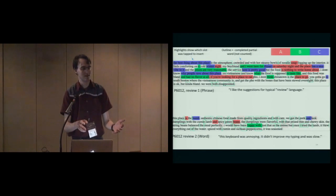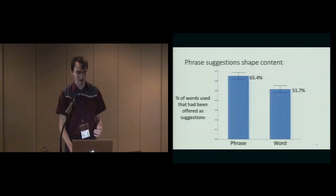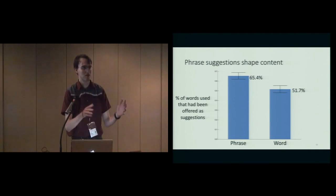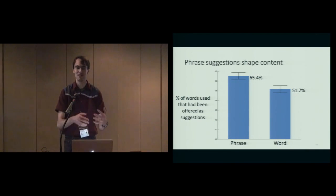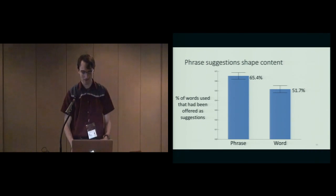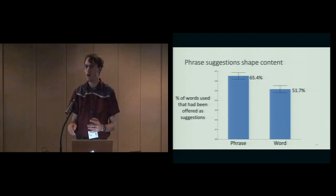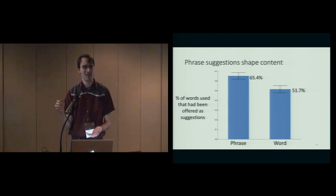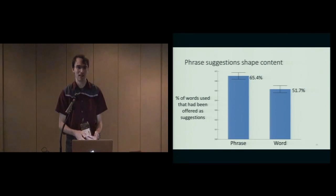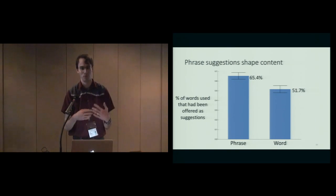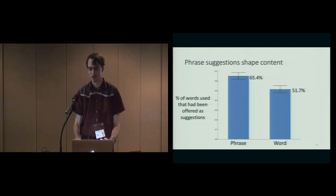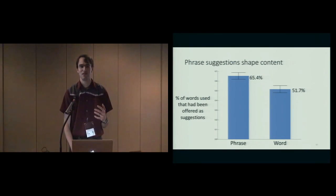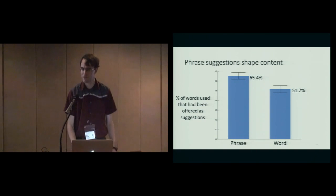It seems like the suggestions that we offered to them made their way into the content of what they wrote a lot more when they could see the phrases than when they couldn't. How can we quantify that? Let's look at the percentage of words in the resulting review that had been offered as suggestions at the time they were entered. We can see that there's almost 15 percent more words in the phrase condition where the phrase previews were visible that got inserted from some word that we suggested them than in the word condition. This shows us that these phrase suggestions are in fact shaping the content of what people write.